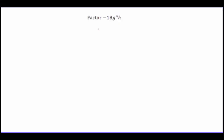This question is asking us to factor negative 18g to the power of 4h. Really what it's asking us to do is to find the prime factorization — it's the exact same thing as what we've been doing before. To do this, I'm going to factor the numerical part of the term first and then I'll worry about my variables later.